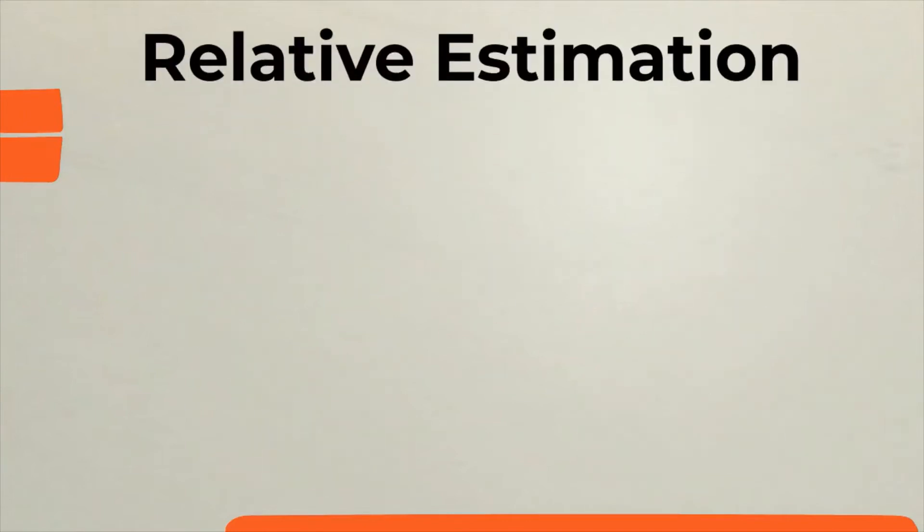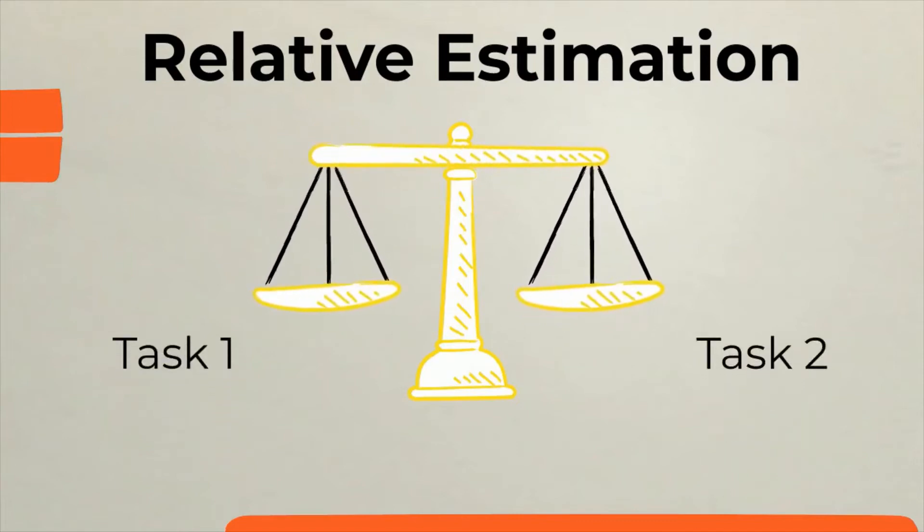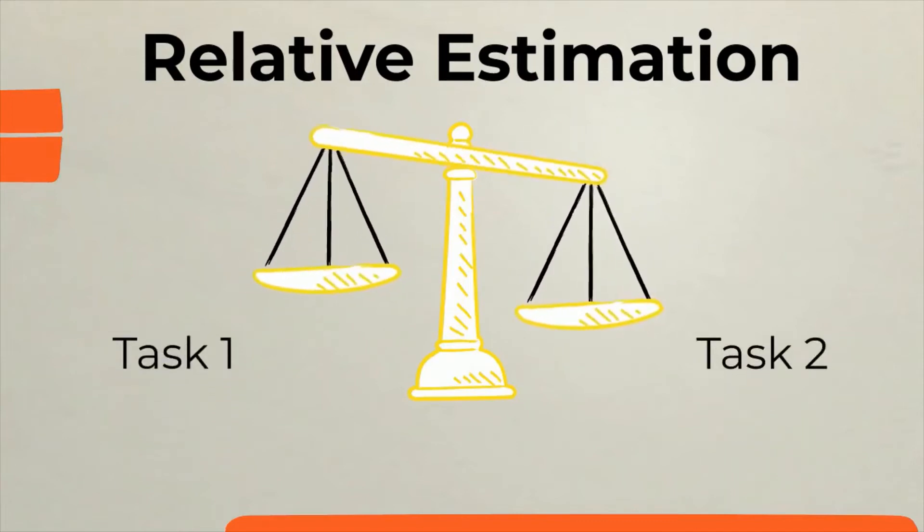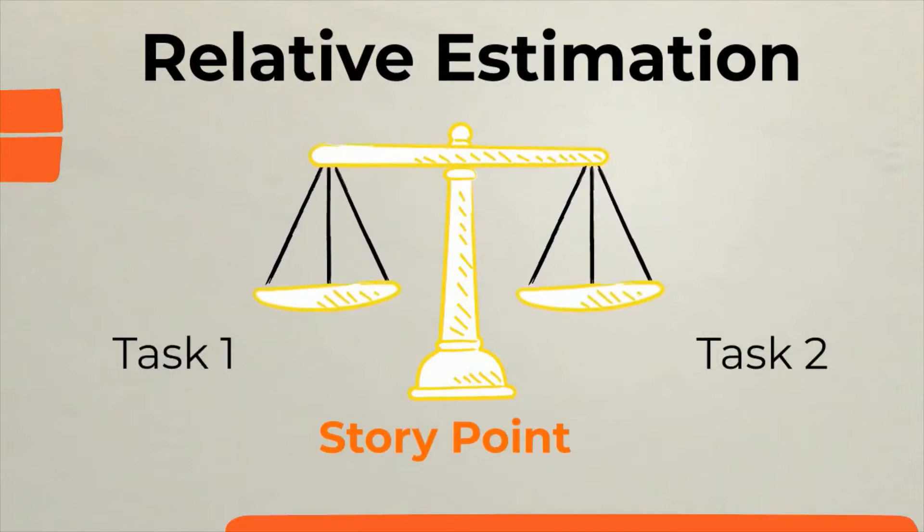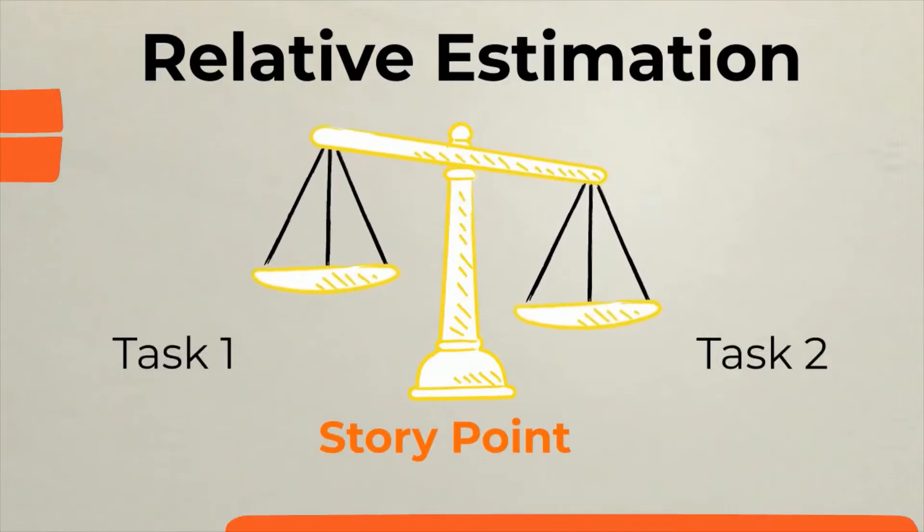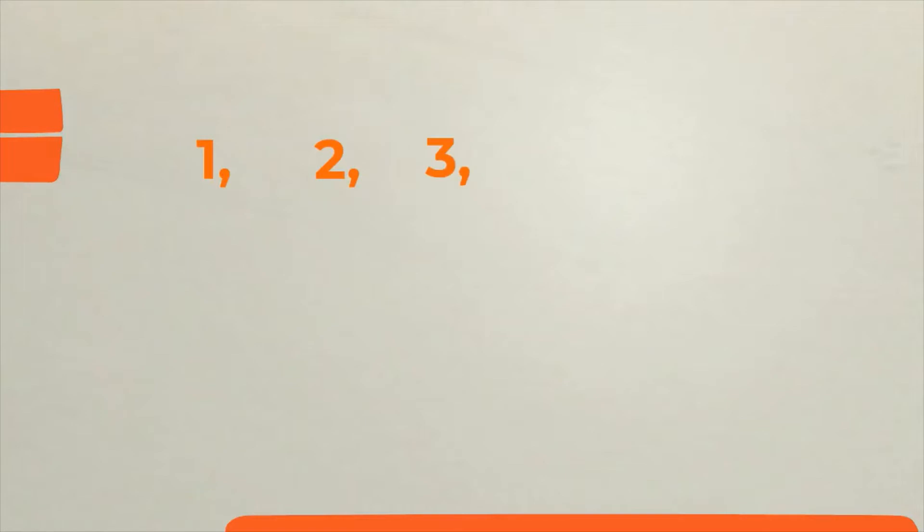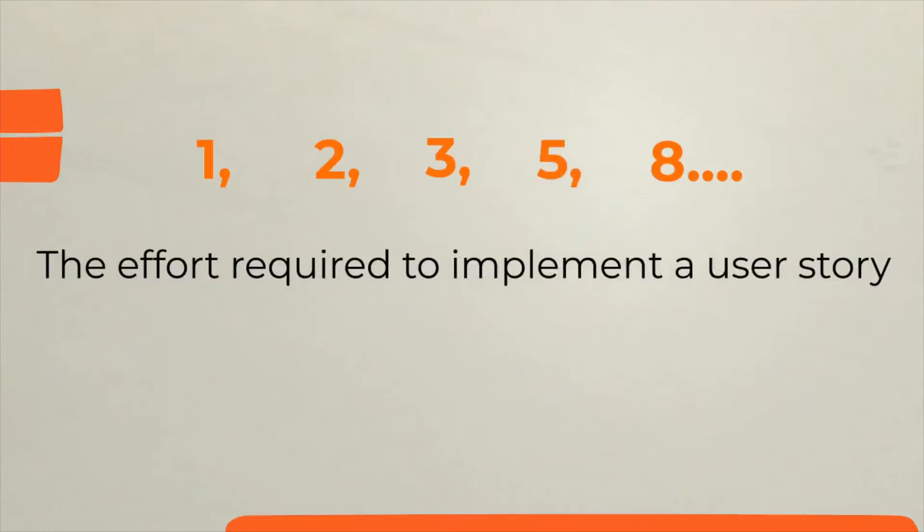Relative estimation means that we judge how big or complex a task is with respect to other tasks. And one of the units of complexity that can be used in this kind of estimation is the story point. So a story point is a number that tells the team about the effort required to implement a given user story.